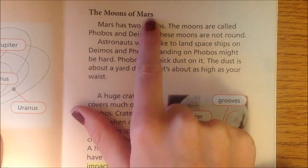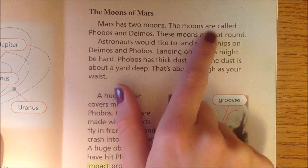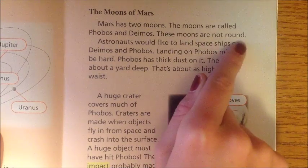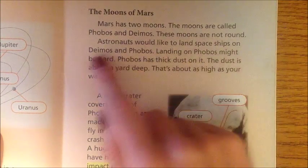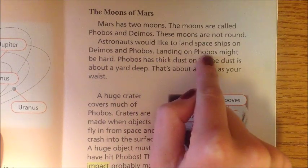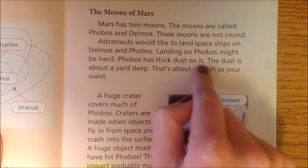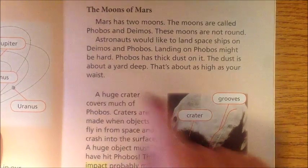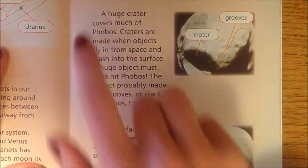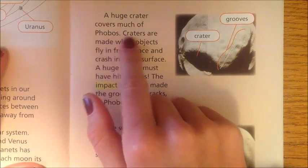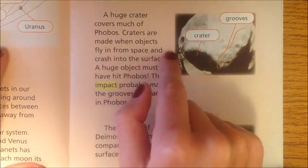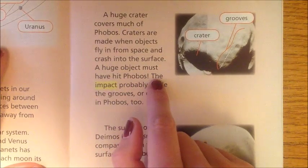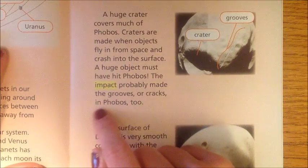The moons of Mars. Mars has two moons called Phobos and Deimos. These moons are not round. Astronauts would like to land spaceships on Deimos and Phobos, but landing on Phobos might be hard — Phobos has thick dust about a yard deep, roughly as high as your waist. A huge crater covers much of Phobos. Craters are made when objects fly in from space and crash into the surface. A huge object must have hit Phobos, and the impact probably made the grooves or cracks in Phobos too.